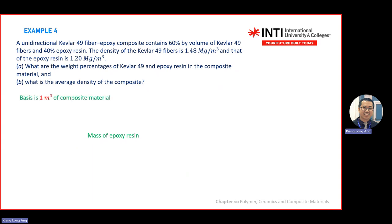To answer Chapter 10 composite questions, assume 1 m³ of material — similar to the approach in Chapter 4 where you assume 1 kg or 100 g. Because we are dealing with density, we assume 1 m³. In 1 m³, you have 0.6 m³ of Kevlar and 0.4 m³ of resin since the ratio is 60-40. Density equals mass divided by volume, so mass equals density multiplied by volume.